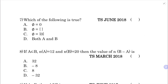Seventh question: which of the following is true? The null set symbol and the empty set symbol are distinct - the correct option is B. The set {0} is not a null set because it contains the element 0, making it a singleton set. The null set has no elements, so option B is correct.